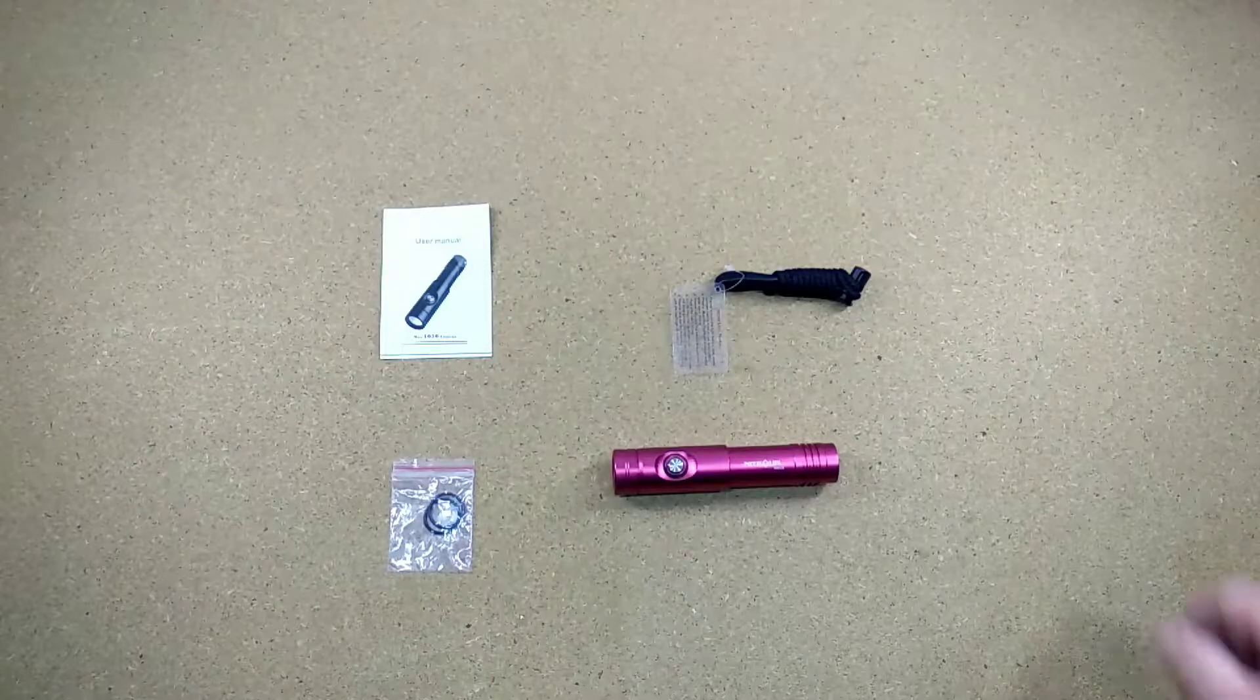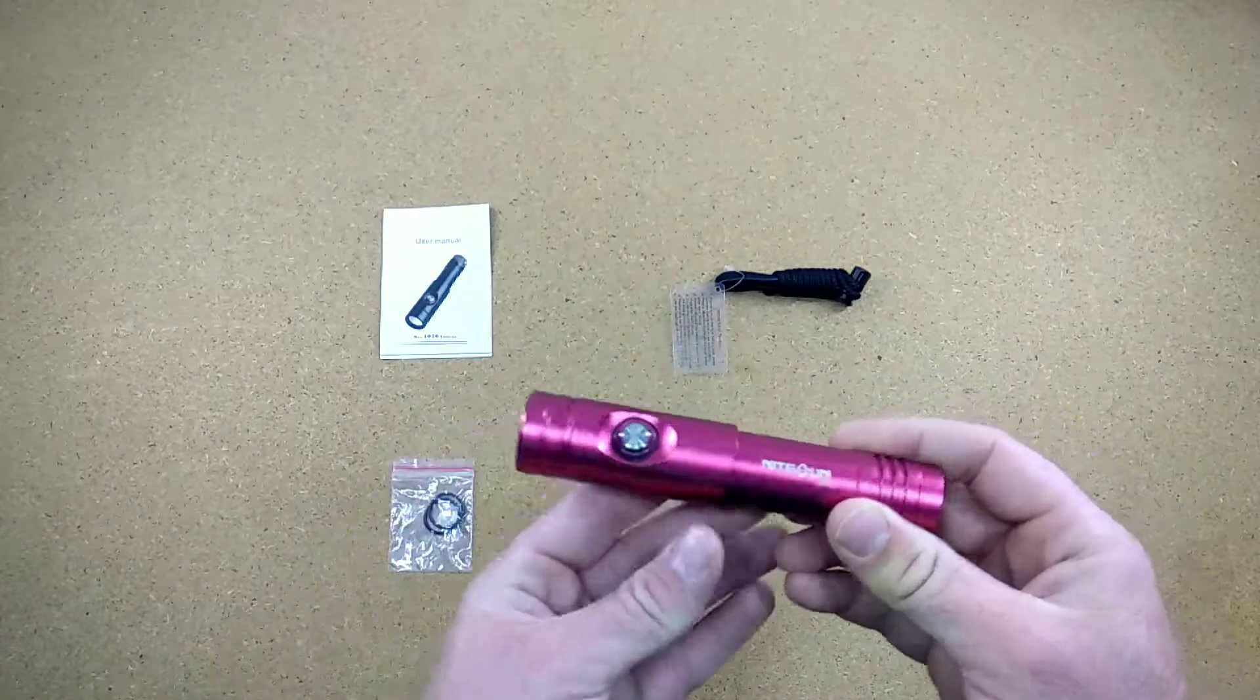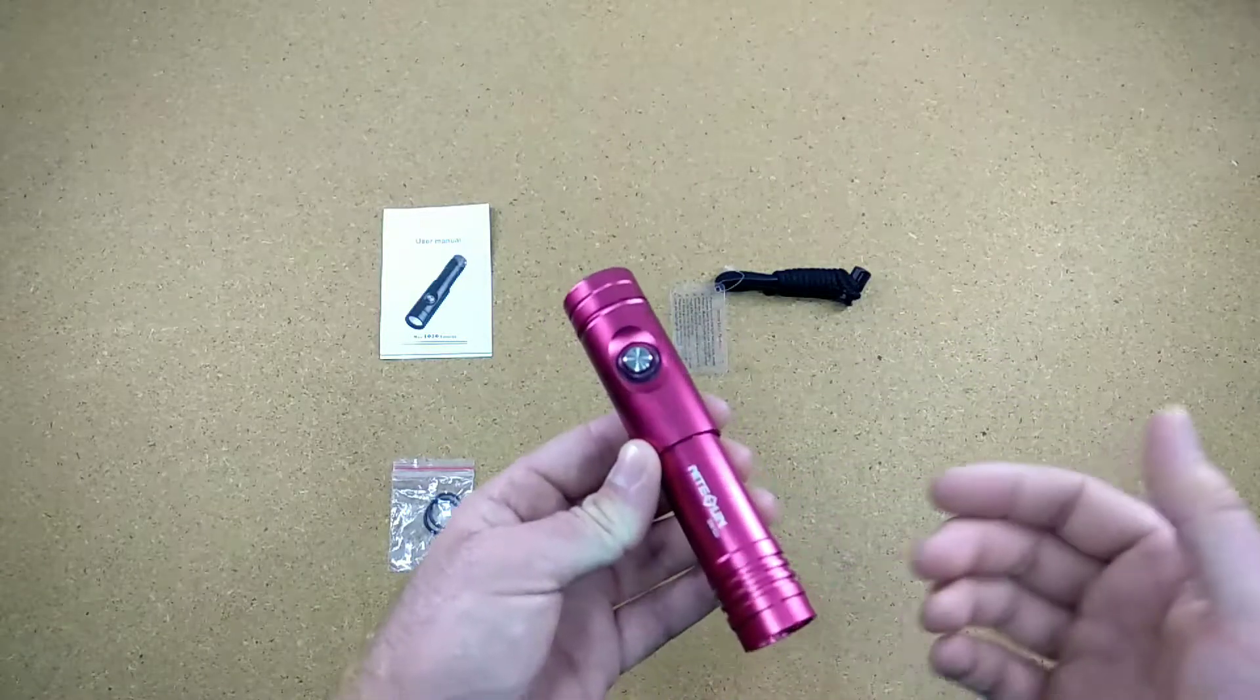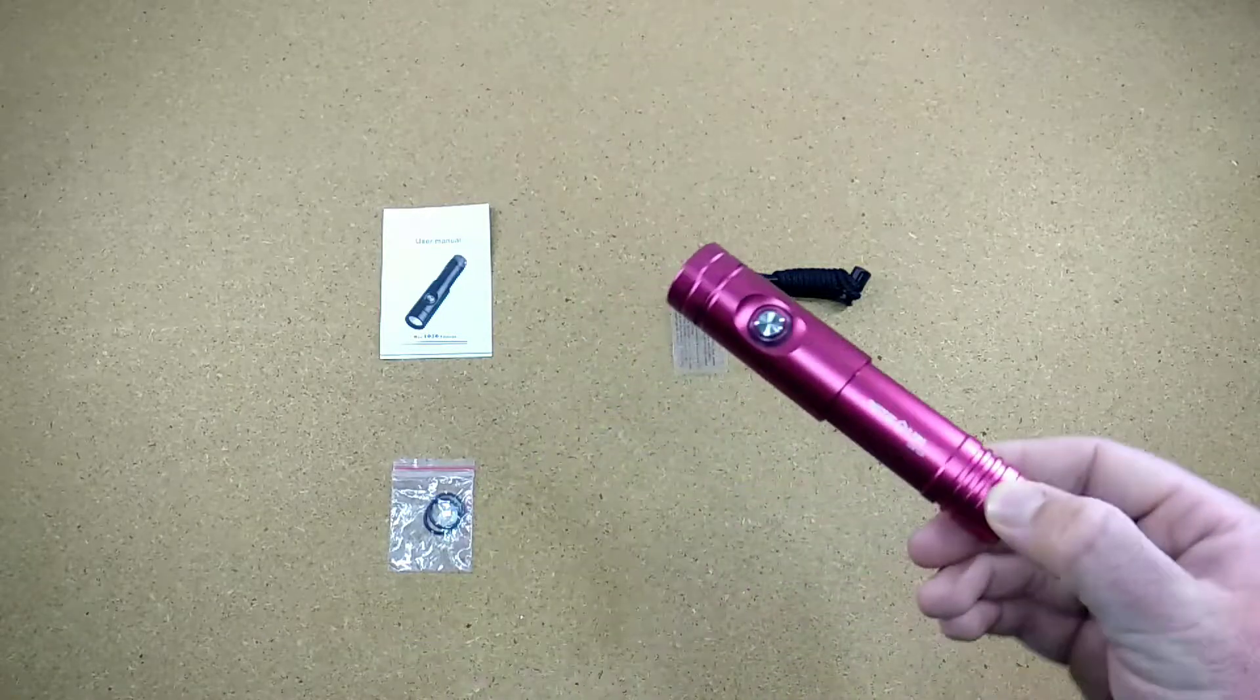Hi guys and welcome back. Today we are taking a look at the new Nightsun DIV-12S, which is a great small handheld torch for a nice backup or even primary torch application. So let's get started.